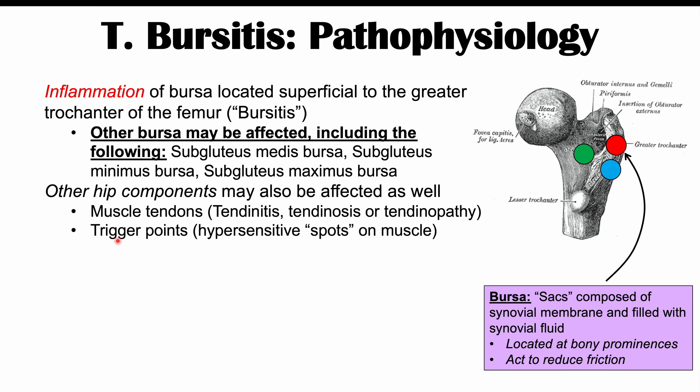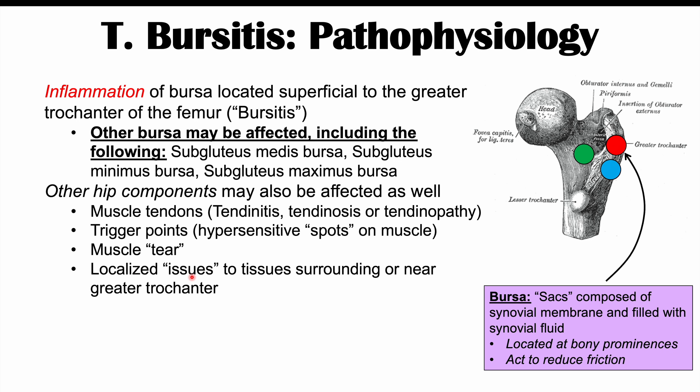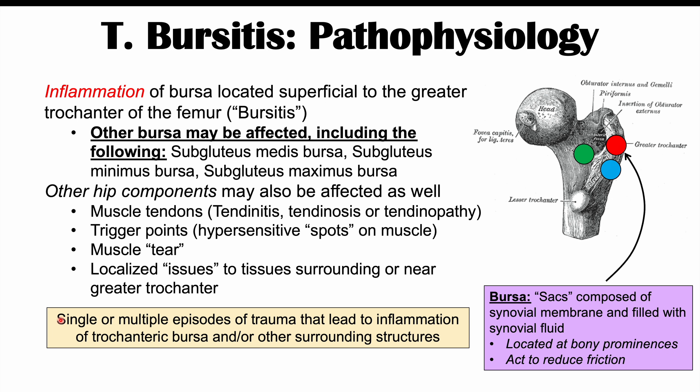Trigger points of the muscles — hypersensitive spots on muscle — may also lead to pain in this condition. Muscle injury or muscle tear can be associated as well. Localized issues to tissues surrounding the greater trochanter can also be a cause. All of these potential anatomical issues that cause greater trochanteric pain syndrome are due to single or multiple episodes of trauma leading to inflammation. This is why the condition is called greater trochanteric pain syndrome — it may not only be the trochanteric bursa affected.